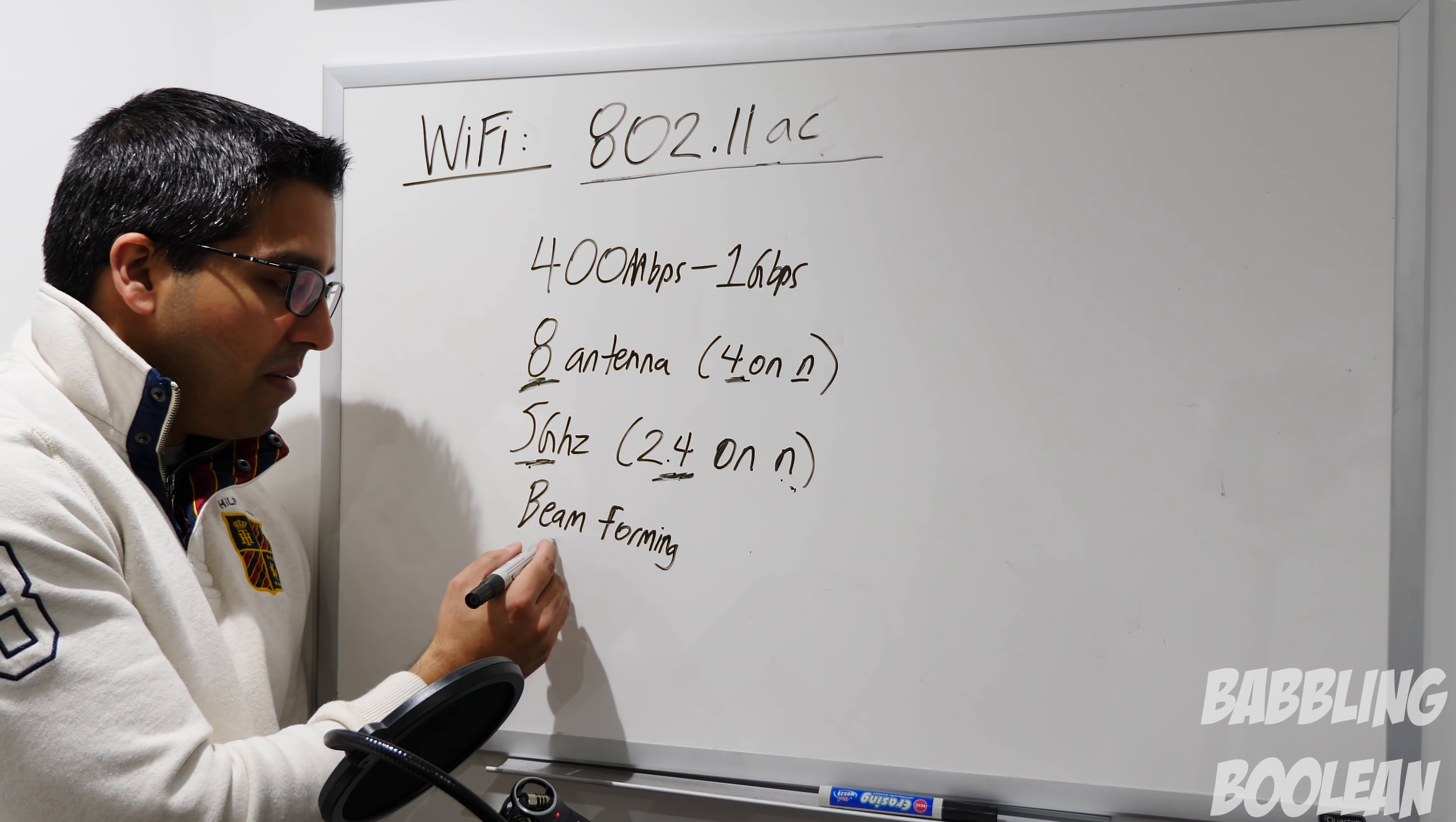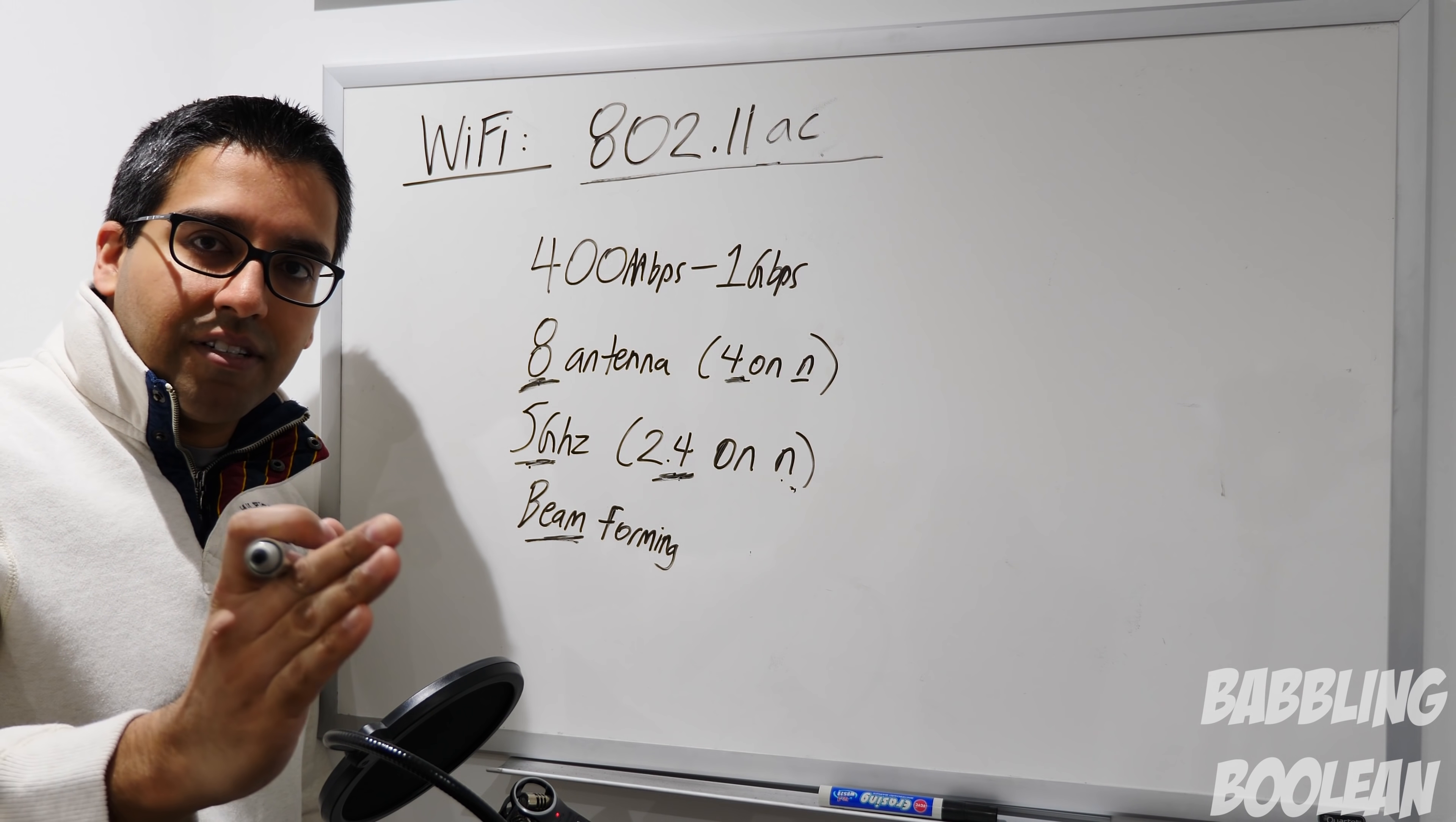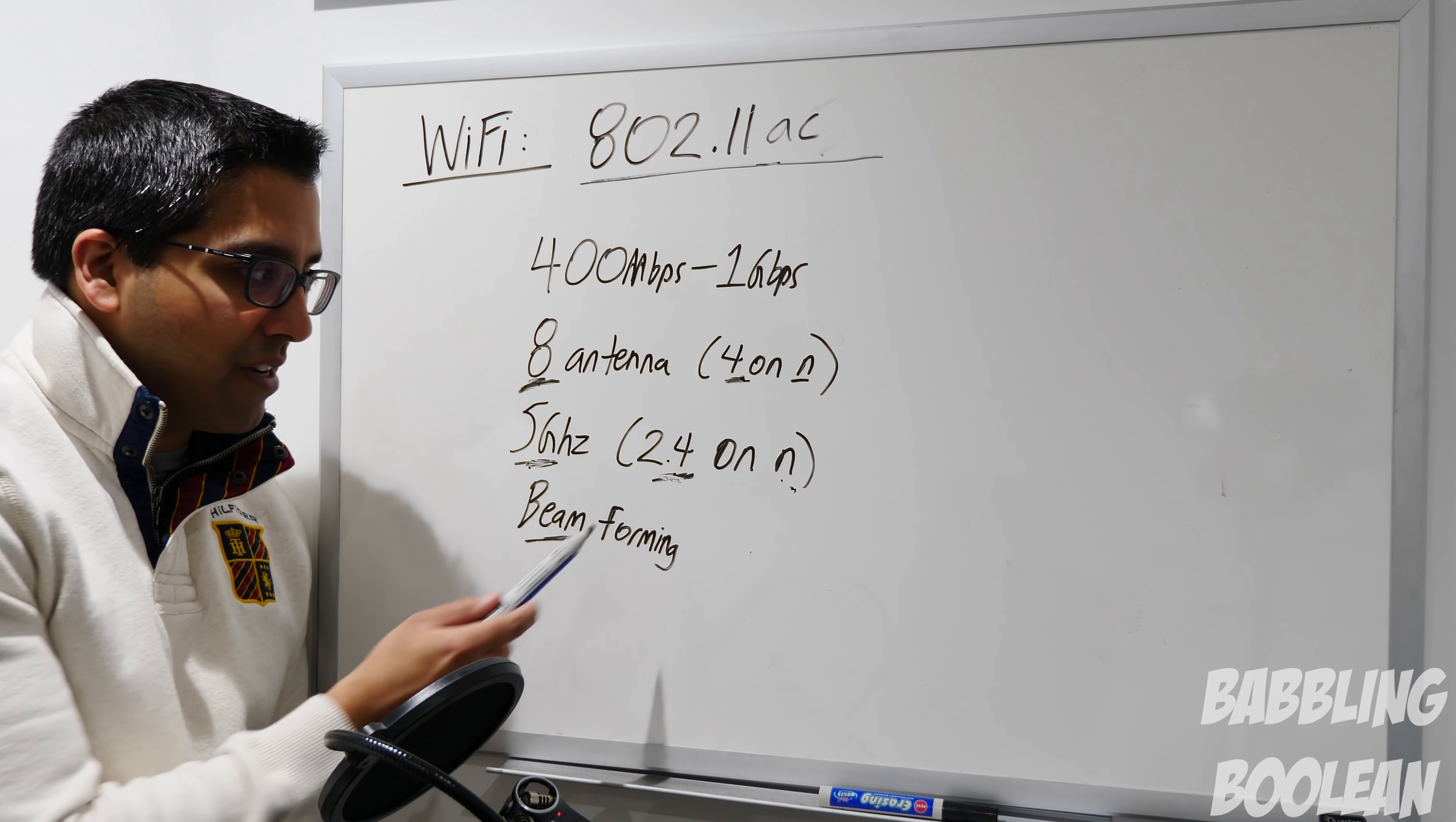The other thing it does is beamforming. So previously other wireless technologies kind of spread the signal in every direction around in like 360 degrees, just trying to send signal to the connected devices. Beamforming tries to do a better job and have better signal strength by looking at where the device is connecting to and only send the signal in that direction, the direction of your device. So it allowed for better signal connectivity. One thing to keep in mind is that AC, because it runs on 5 gigahertz signal, is not backwards compatible with G and B devices because they run on 2.4 gigahertz frequency. The way you're able to connect back to them on an AC router is because it's using N technology.